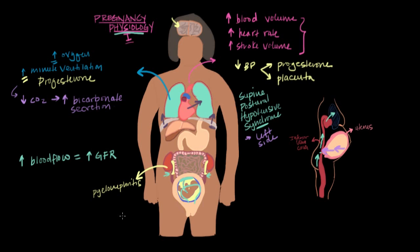Alright, so those are some of the physiologic changes that occur in pregnancy with the cardiovascular system, the respiratory system, and the renal system.